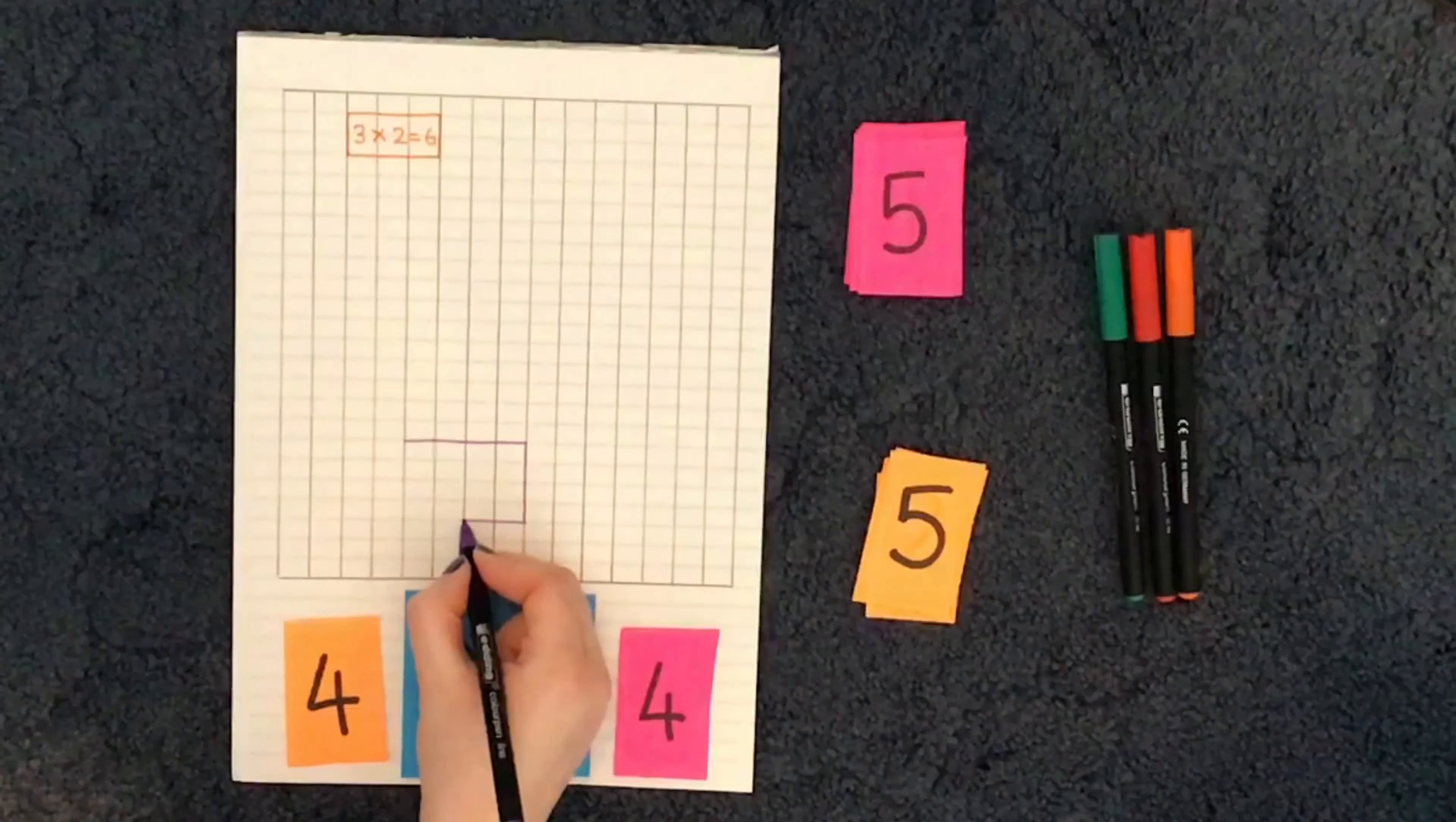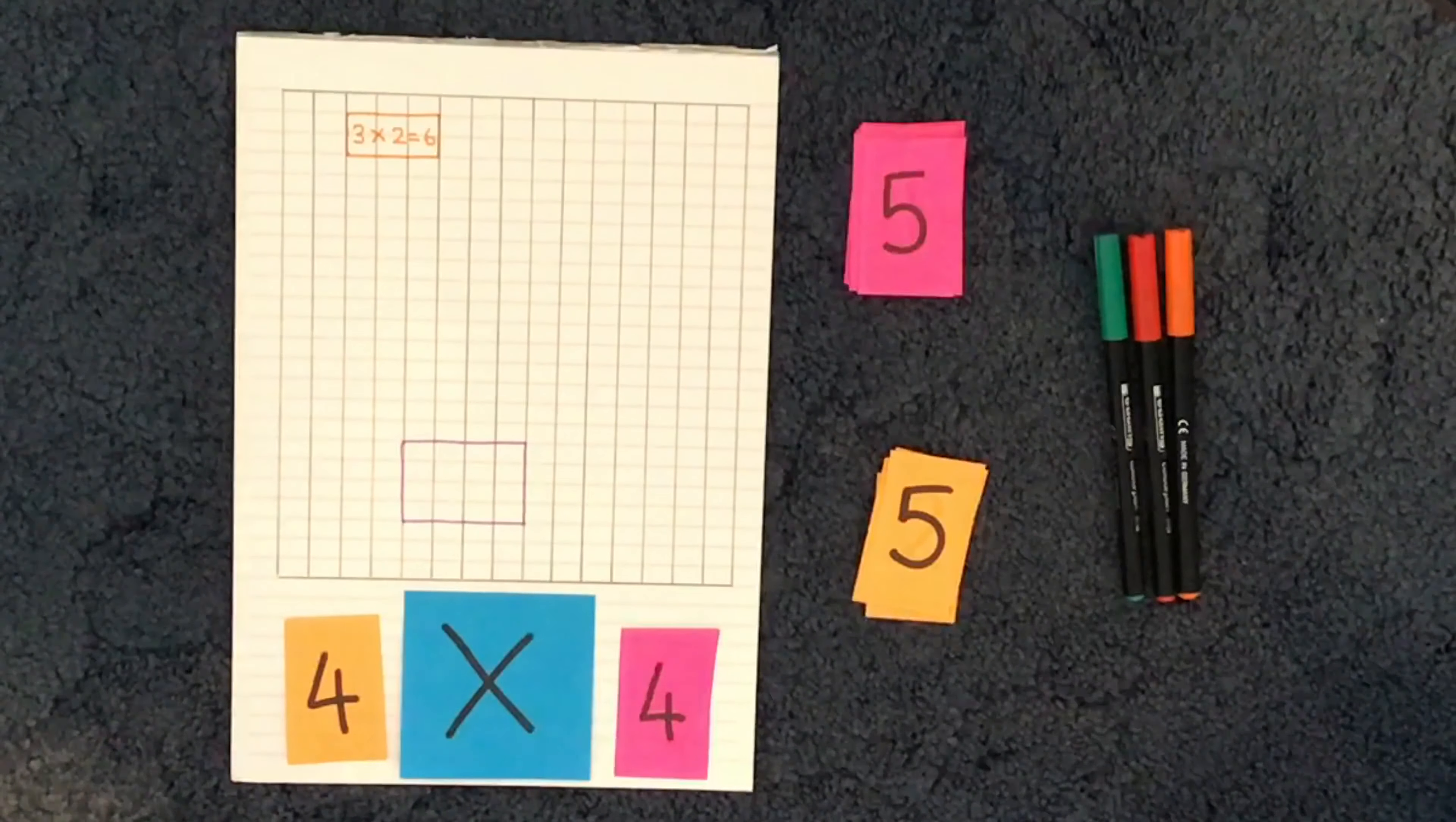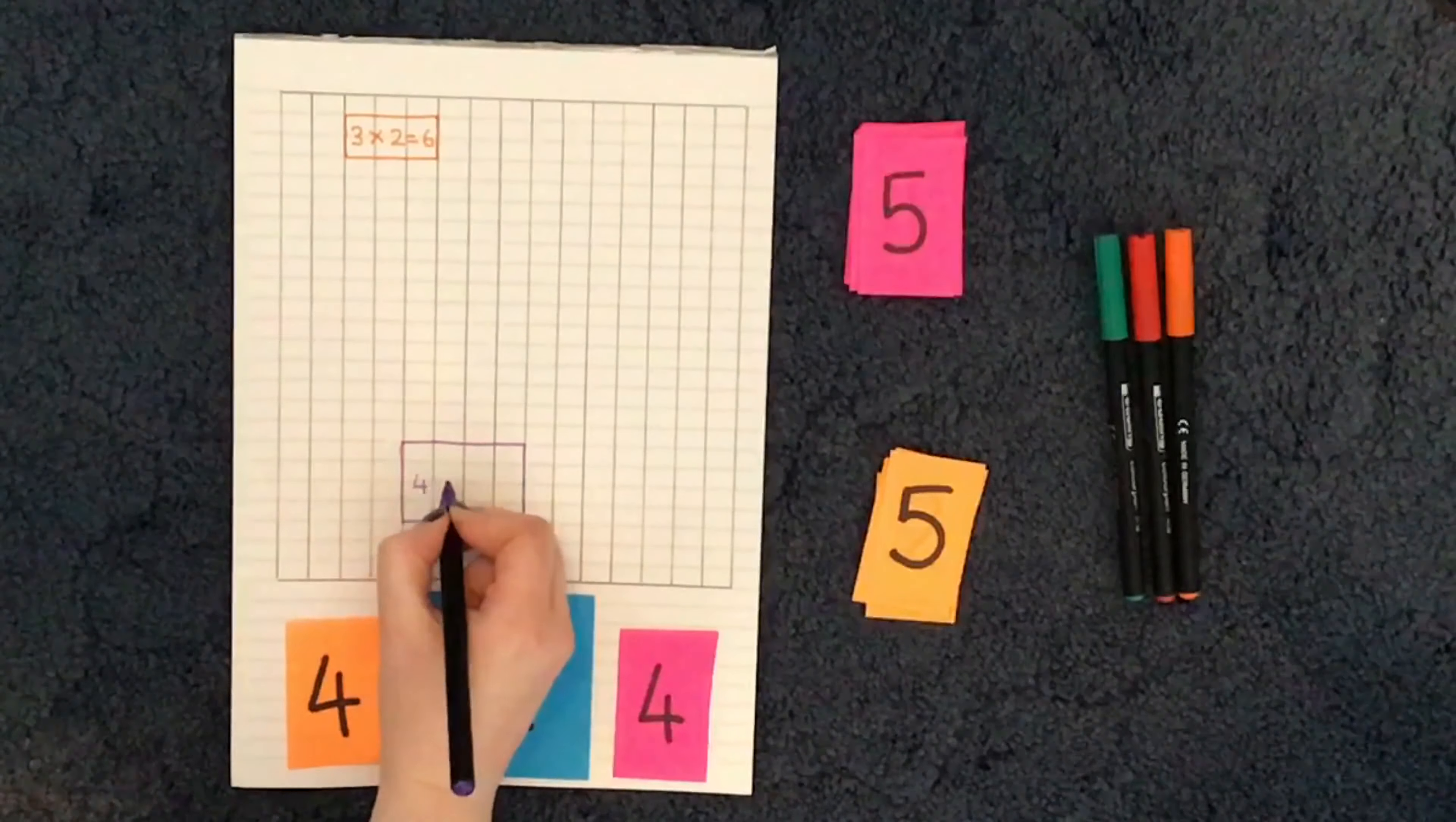1, 2, 3, 4. 1, 2, 3, 4. And again, if you're not sure what 4 times 4 is equal to, then you can count the boxes inside the shape you have drawn. 4 times 4 equals 16. So I'm going to make sure I write that as well.